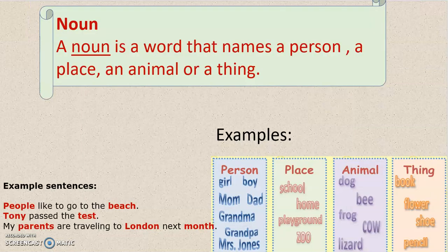Let's have a look at the noun. A noun is a word that names a person, a place, an animal, or a thing. For example, a boy, a girl, a school, a home, a dog, a cow, a book, a shoe.